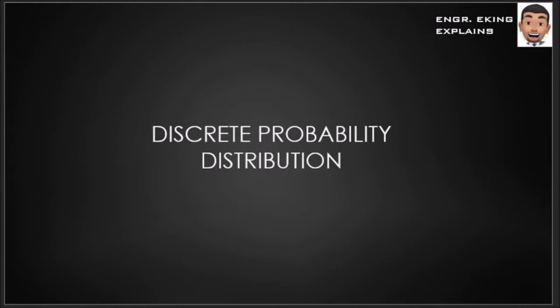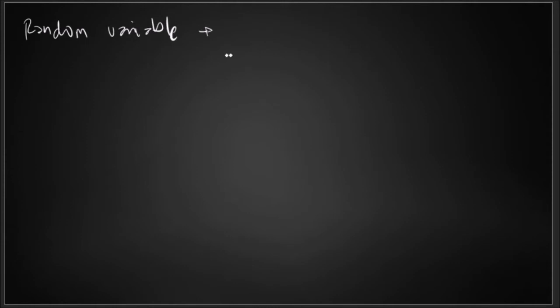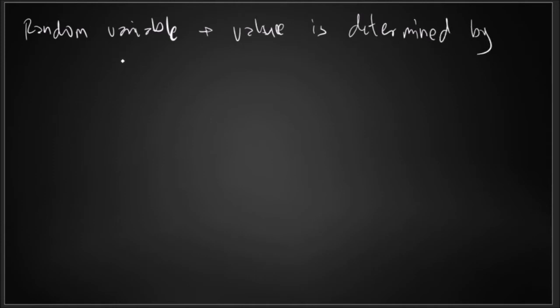So in this video, we'll be talking about discrete probability distribution. As a review, we will also be defining what is a random variable. A random variable is a variable whose value is determined by chance, or the value itself is determined by the probability experiment.